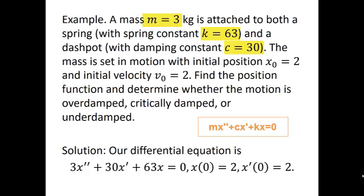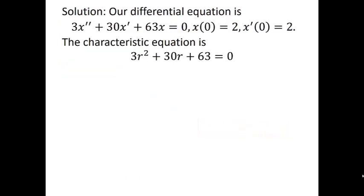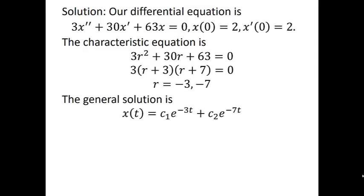So we want to solve our differential equation. The characteristic equation is 3r squared plus 30r plus 63 equals 0. Pull out a 3, and then it will factor into r plus 3 times r plus 7. So we have two real roots, negative 3 and negative 7. The general solution will be c1 e to the minus 3t plus c2 e to the minus 7t.